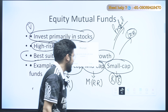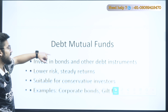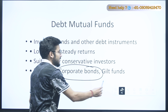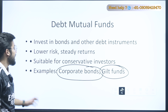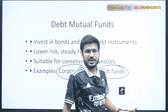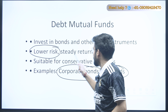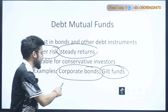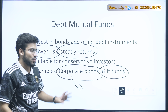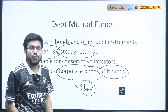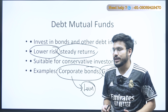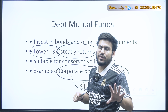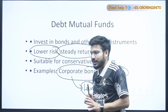Equity funds are best suited for long-term growth because over the long term they are capable of giving good returns and compounding your returns. The examples are large cap, mid cap, and small cap funds. In small caps you get good returns but with high risk. In mid cap there is a moderate amount of risk and reward. In large cap the funds are comparatively less risky but the returns are also lower than mid caps and small caps.